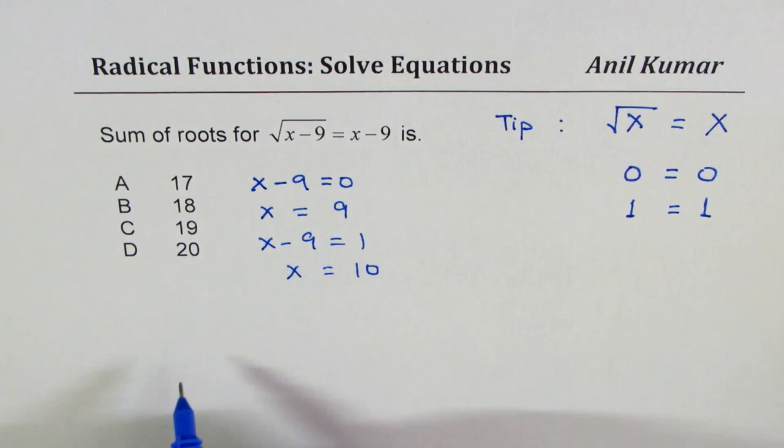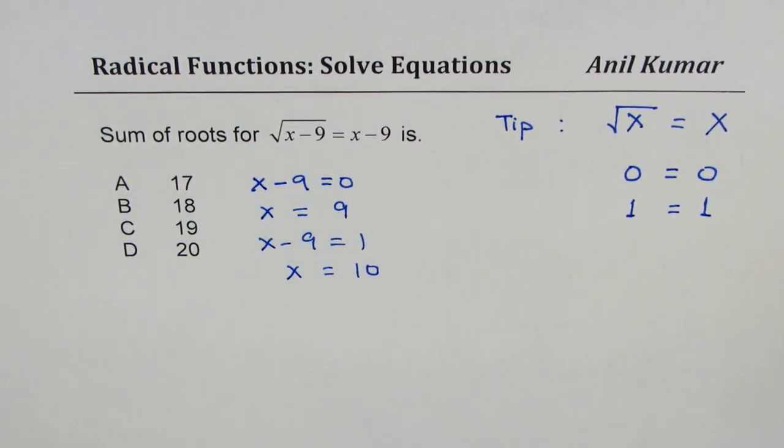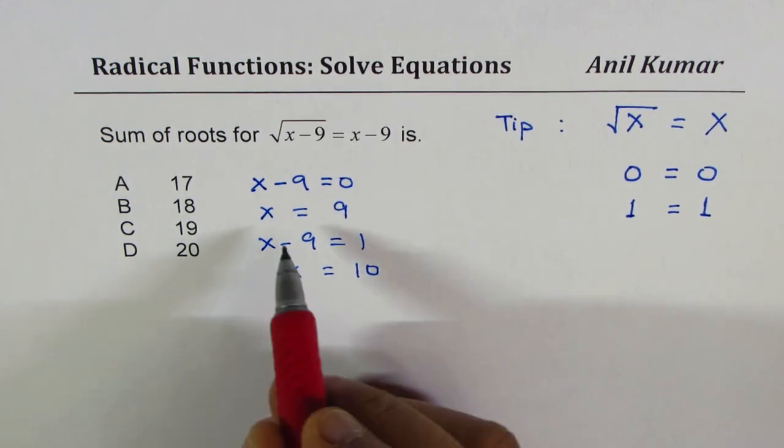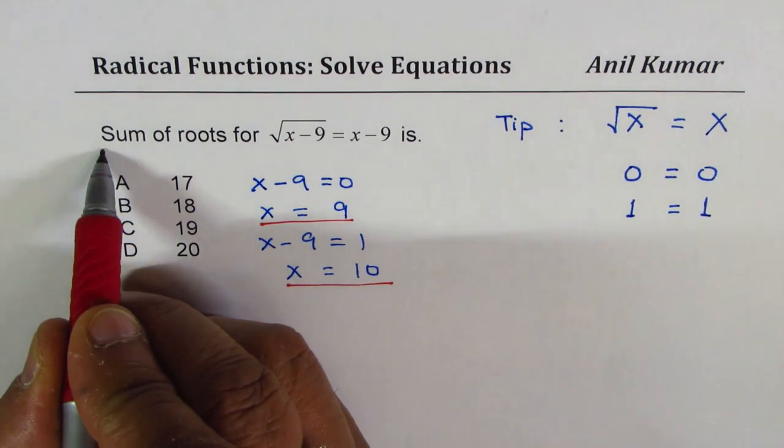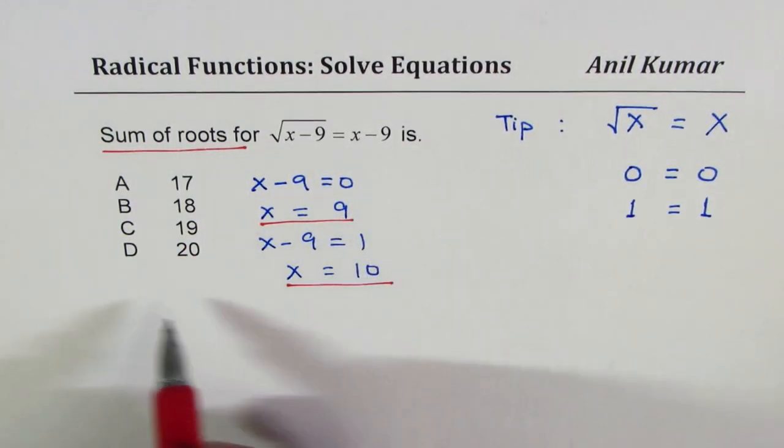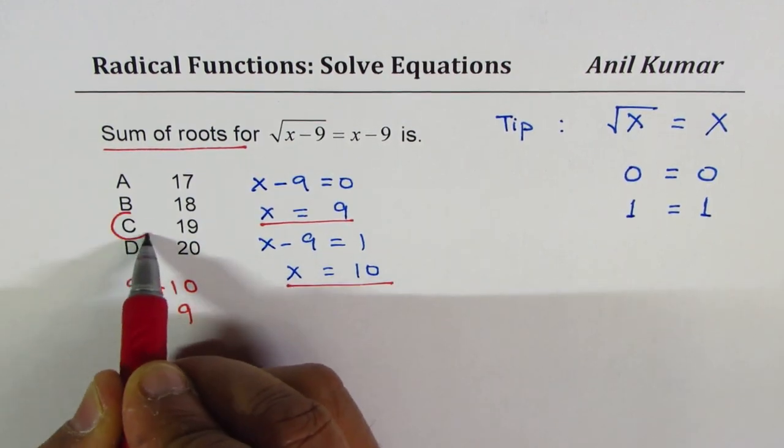Therefore there are two solutions, 9 and 10. The question says sum of roots, so just add them: 9 plus 10 equals 19. So option C is the right option.